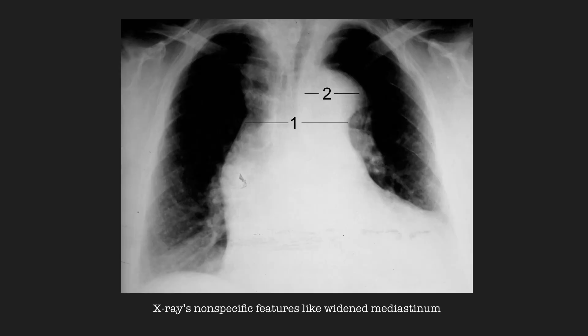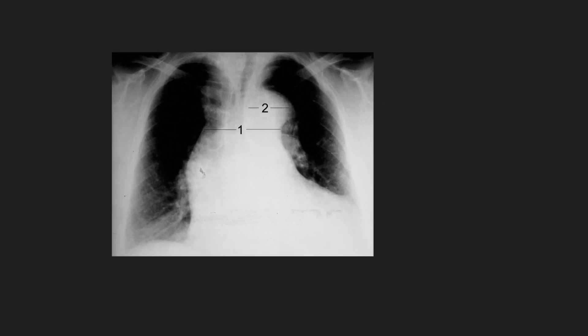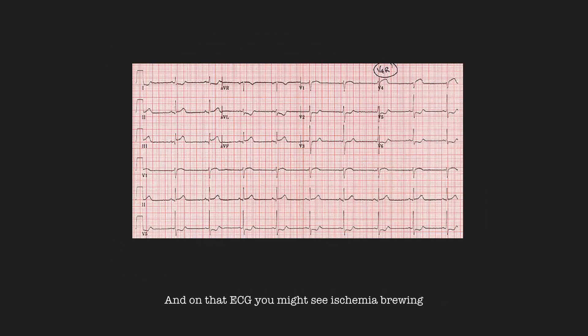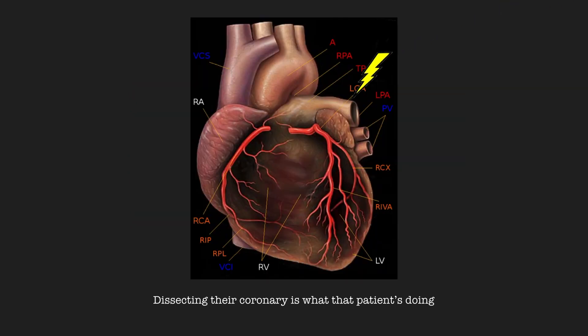X-rays show non-specific features like widened mediastinum. Get more specific with clinical features if you combine them. And on that ECG, you might see ischemia brewing — dissecting into the coronary is what that patient's doing.